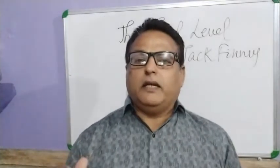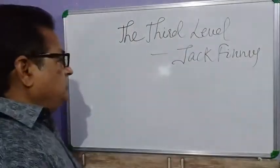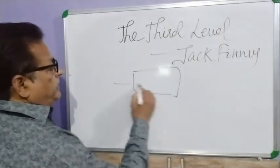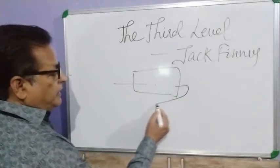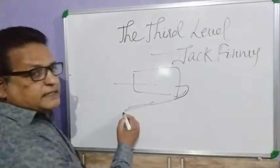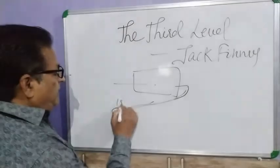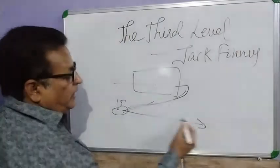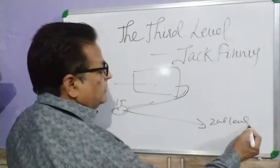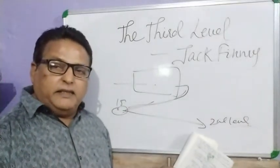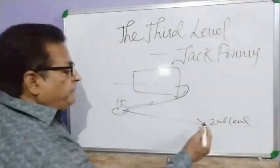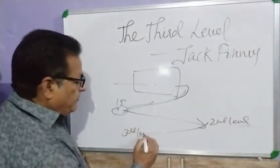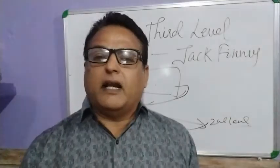The third level — you can understand it as a floor. Suppose this is a Grand Central Station; you enter from here and from here another road, a down road goes below. It's a subway and here is the first level, and from there again it goes down and this is the second level. So there are actually only two underground floors in the Grand Central Station.